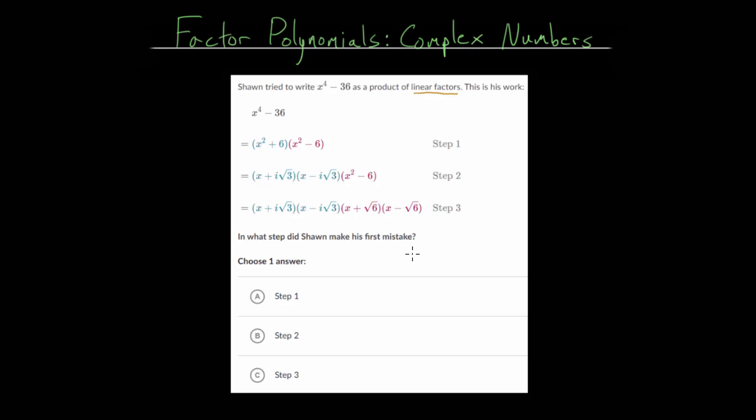So with this type of problem, there are two general strategies. One is that we can work this out ourselves and compare our work to his work. Or we can at each step just re-multiply everything back out using distribution and see if we get what we had from the step before. So it's more instructive to work it out ourselves. So let's take that approach.